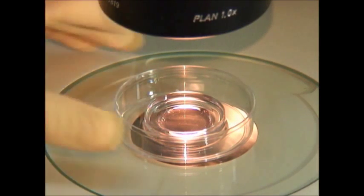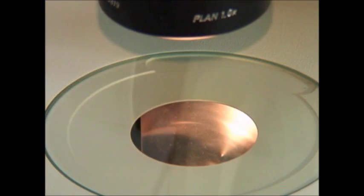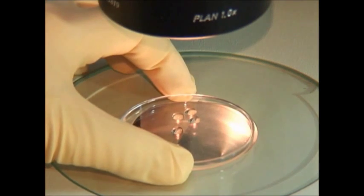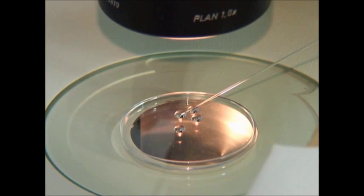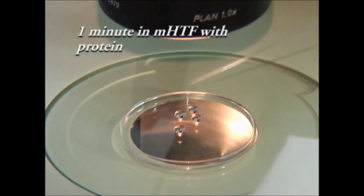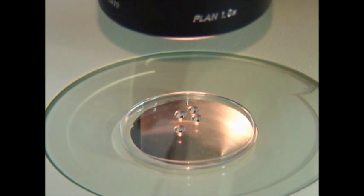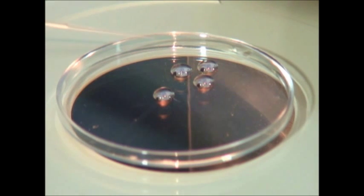Prior to starting the procedure, the cryotips should be inspected under the microscope to rule out any defects. Next, four 20 microliter media drops are made in a sterile dish - one drop with modified human tubal fluid or HTF and the remaining three drops with the equilibration solution.